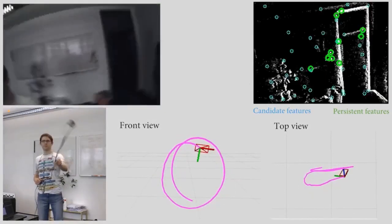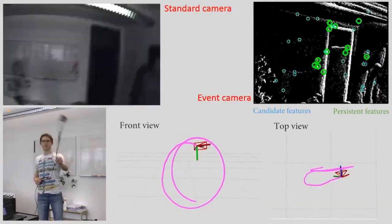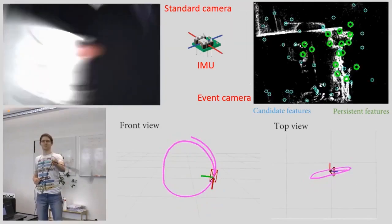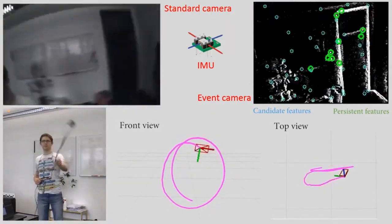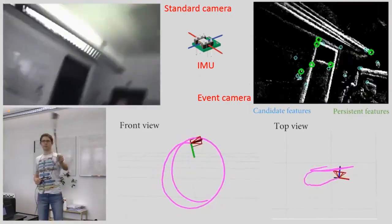In this work, we propose the first system that can use together an event camera, a standard camera, and an IMU to perform robust 6 degrees of freedom visual SLAM in high-speed conditions in high dynamic range scenes.